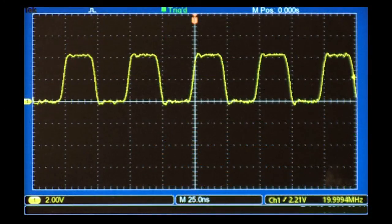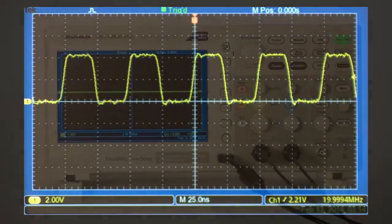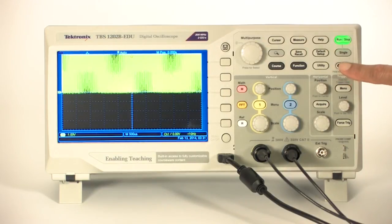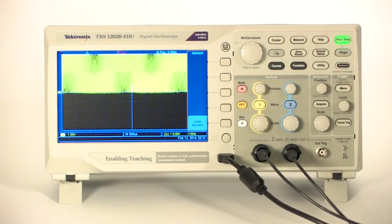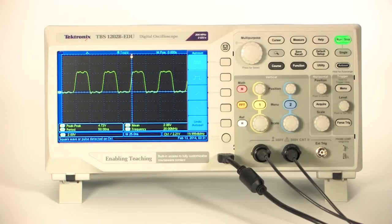The easiest type of signal to trigger on is a periodic one, like a clock. Let's look at a clock signal with frequency of 20 MHz and amplitude of 4 volts. In general, pressing Auto-Set is a good first step toward getting a stable waveform, especially for periodic signals.